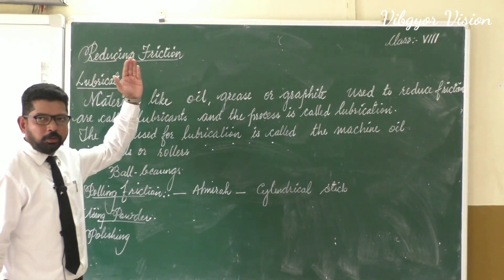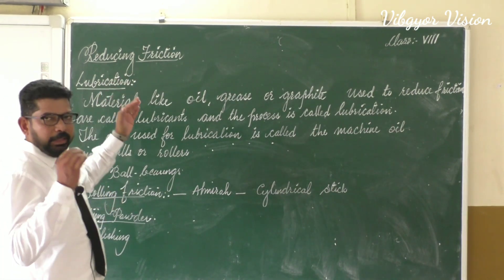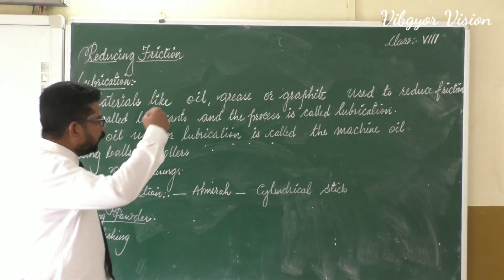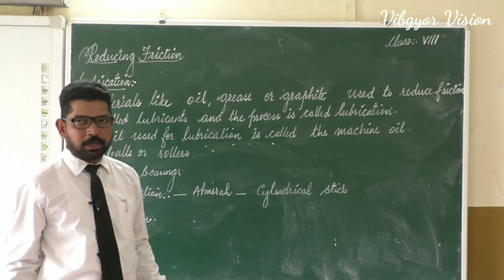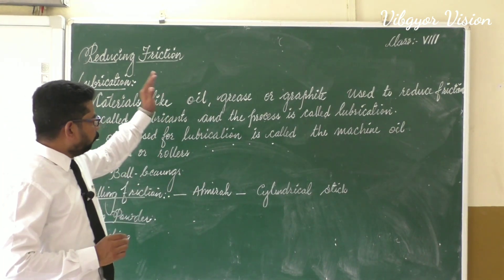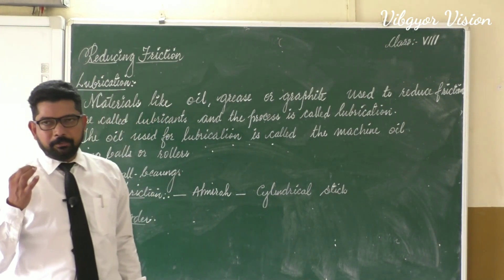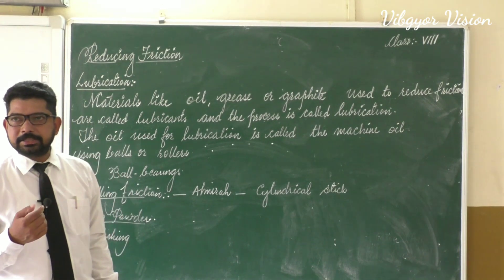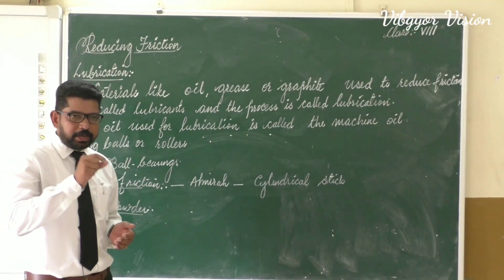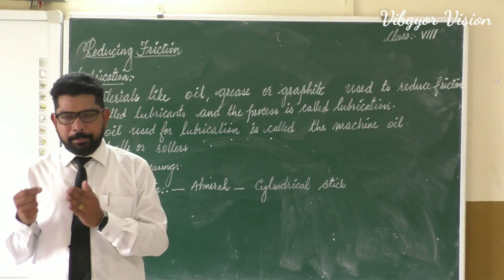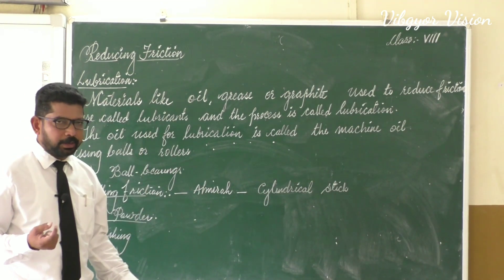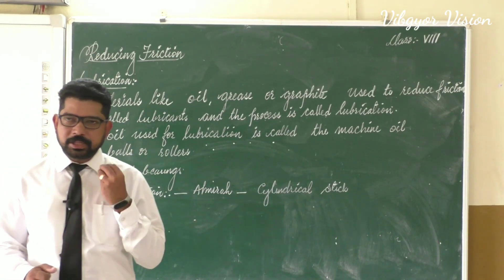If you want to write something on the board, there should be friction between the chalk piece and the blackboard. If there is no friction, it won't be possible to write. Take a glass and try writing with chalk — it's not possible because glass offers the least friction. Similarly, if you want to write in your notebook, there should be friction between the notebook and your pen or pencil. If the notebook is laminated, it won't be possible to write because there is no friction.